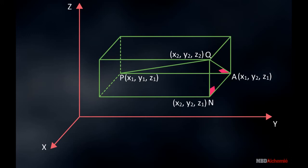Now we know the formula of the shortest distance between two points. AP is equal to Y2 minus Y1 as X and Z coordinates cancelled out. Similarly, AN is equal to X2 minus X1 and QN is equal to Z2 minus Z1.